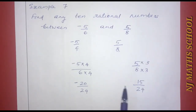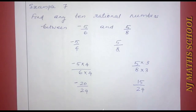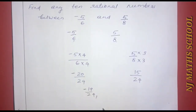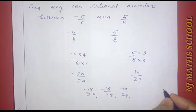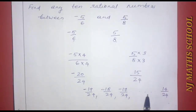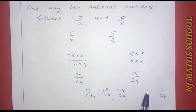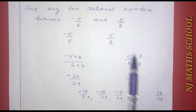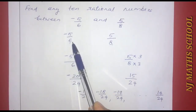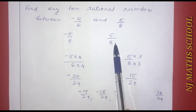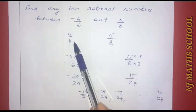Between negative 20 by 24 and 15 by 24, we can find: negative 19 by 24, negative 18 by 24, negative 17 by 24, and so on. We pick 10 rational numbers from these, for example negative 19 by 24 through negative 10 by 24.